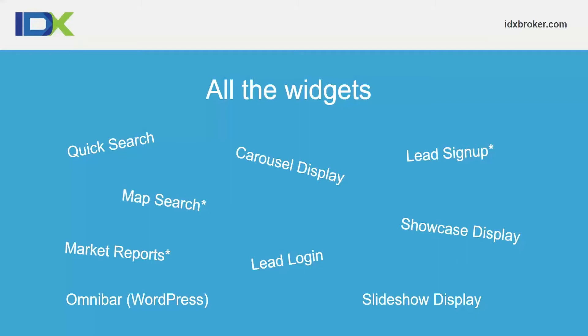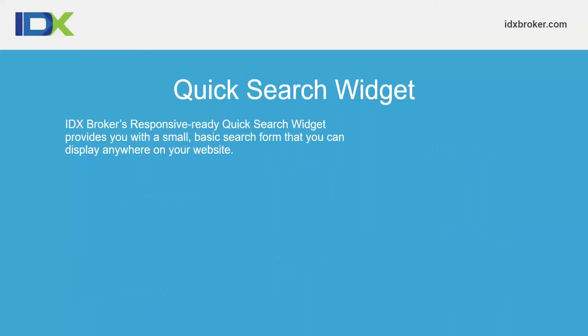The omnibar widget is specifically for WordPress accounts only — it uses our WordPress plugin in order to display. If at any time you have questions, feel free to send them in within the app. Bishop is online answering those questions, and some I'll hold off and answer in person at the end of the webinar. Now we're going to get started with quick search widgets.